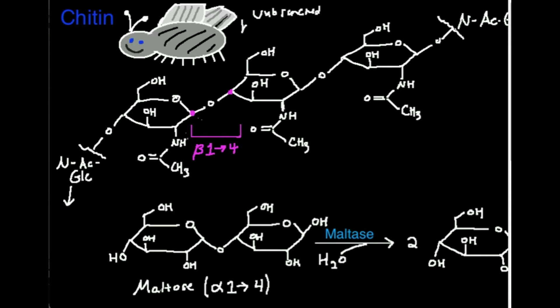The other property is that chitin is what's referred to as a homopolymer. Homo typically means the same, so it's the same repeating units — only N-acetyl-glucosamine. There are other polymers like the carbohydrate component of peptidoglycan in bacterial cell walls — that's not a homopolymer, that's a heteropolymer, because it's made up of repeating units of NAM and NAG alternating. NAG is N-acetyl-glucosamine; NAM is N-acetyl-muramic acid. Chitin is a homopolymer — unbranched and a homopolymer.